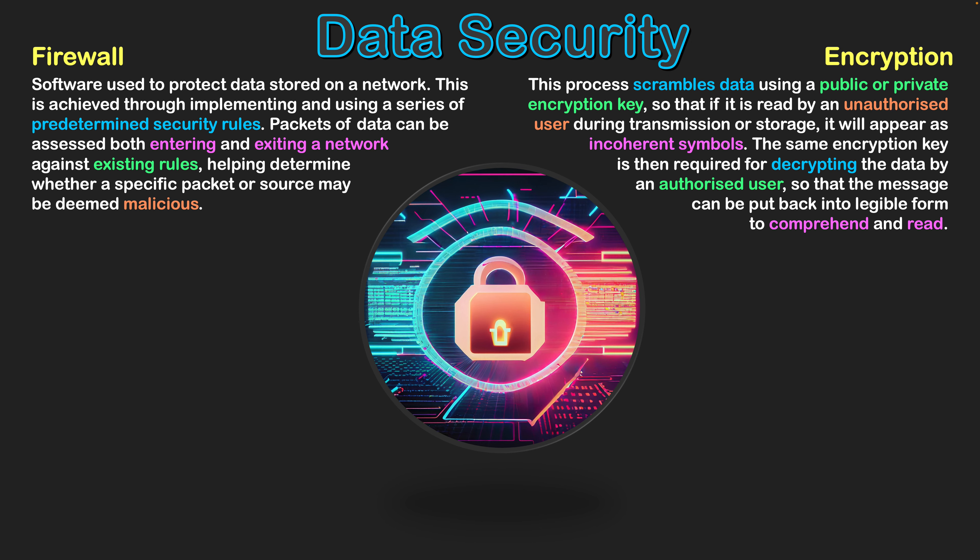The second area is encryption. This process scrambles data using public or private key encryption, so that if the data is read by an unauthorized user — whether during transmission or storage — it will appear as incoherent symbols. When communicating with a server, you'll sometimes see a lock in the browser's address bar, which means data is being encrypted during transmission. It's being scrambled when sent, then unscrambled when received on the server's end. This also applies to local networks and hard drives.